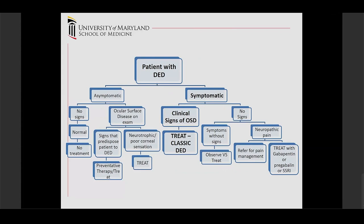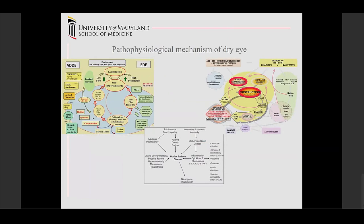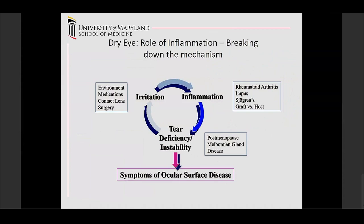Symptomatic patients with no signs are called sign-symptom disconnect, and it's a bit harder to treat because there's no clear endpoint. There are also patients with a neuropathic pain component, and those you treat like any other neuropathic pain — you can refer for pain management, or use gabapentin or an SSRI. The mechanism of dry eye is cyclical: one issue leads to another, so you have to break the cycle.